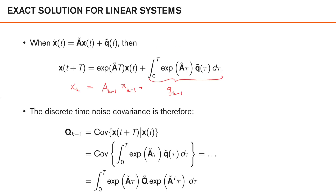Q_{k-1} is supposed to represent the integral of our time-continuous noise process over our sample interval, weighted with this matrix function here. When we integrate the noise, this matrix will determine how the noise spreads out in the different state dimensions. We can look at this by calculating the discrete time noise covariance — the covariance matrix of Q_{k-1}. We can write the covariance of Q_{k-1} as capital Q_{k-1}, and express this as the covariance of X(t+T) when we know X(t), so this covariance is the covariance of the integral term.